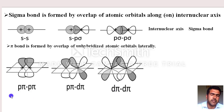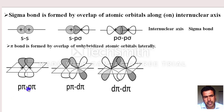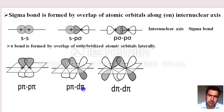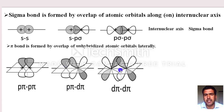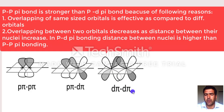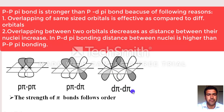When one atom's d orbital overlaps sideways with another atom's d orbital, this forms a dπ-dπ pi bond. So in summary, the three types of pi bonds are: pπ-pπ (p overlaps with p), pπ-dπ (p overlaps with d), and dπ-dπ (d overlaps with d).